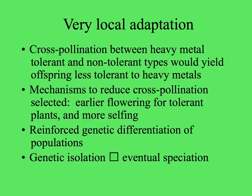This was an example of very local adaptation. Cross-pollination between the heavy metal-tolerant and the pasture plants would yield offspring that were less tolerant, so another mechanism evolved to reduce cross-pollination: the tolerant plants bloomed earlier and became more self-pollinating. That reinforced the genetic differentiation of the populations, and that genetic isolation led to eventual speciation.